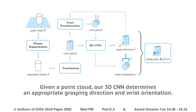Each segmented cloud is voxelized to generate a voxel grid. Our approach is twofold here. First, the 3D CNN predicts the most likely grasping direction from the voxel grid. Second, the 3D CNN estimates the most likely wrist orientation after transforming the voxel grid so that the grasping direction is from the top.